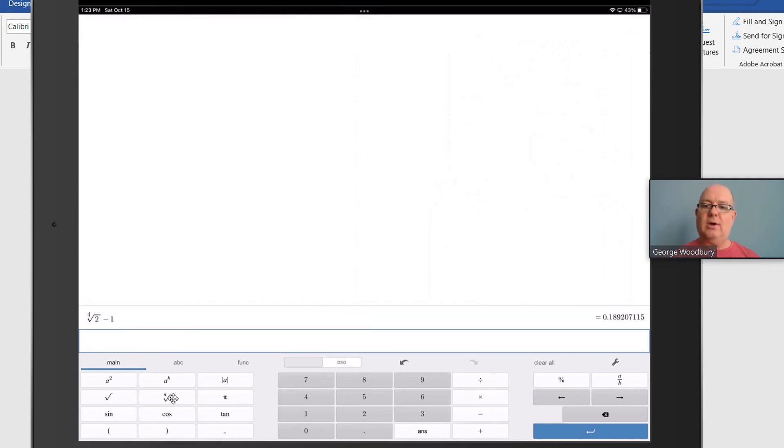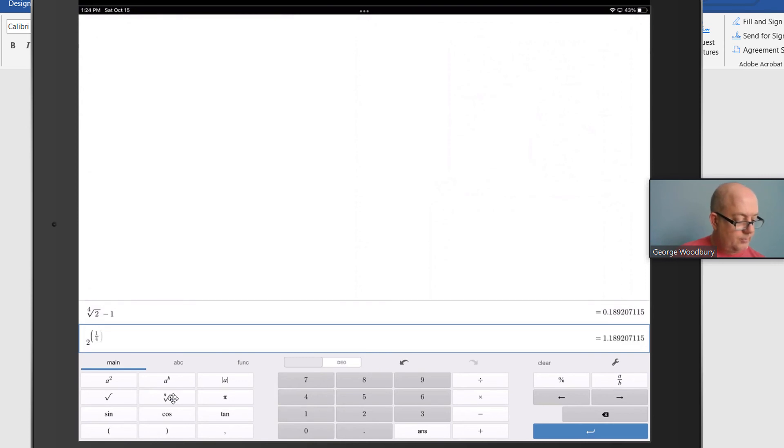The other way you could do it, if your calculator doesn't have that nth root feature, we know that we could also just raise 2 to the one-fourth power. So 2 exponent, parentheses, 1 slash 4, and tap outside of there, subtract 1, we get the same answer.